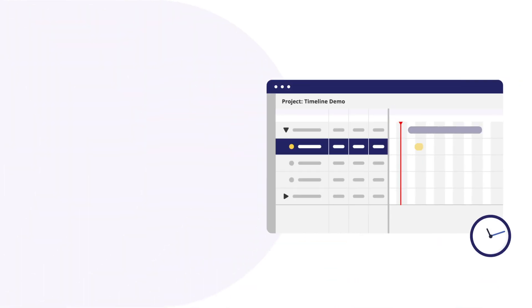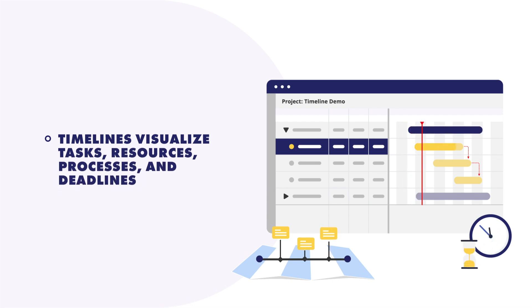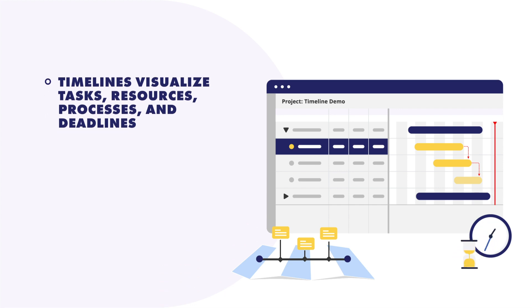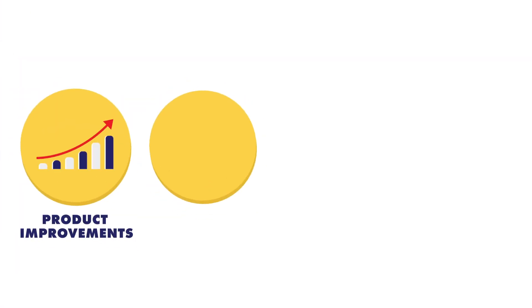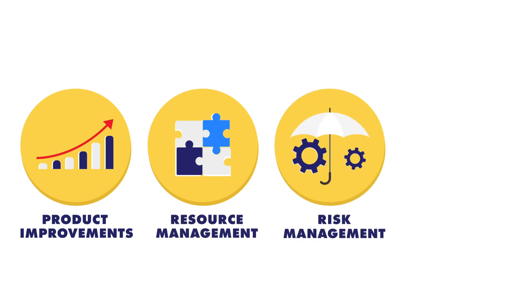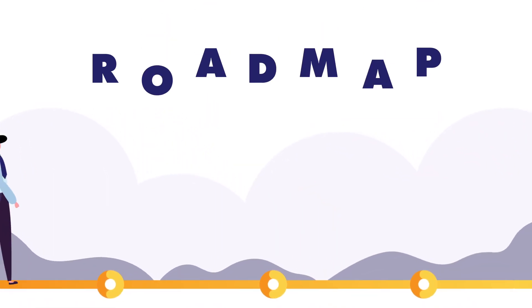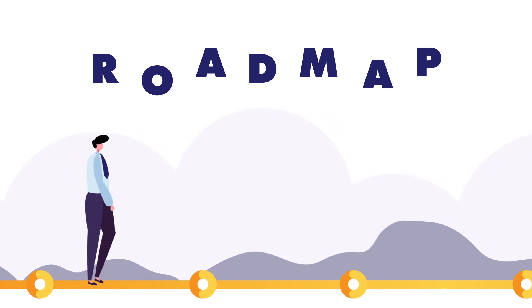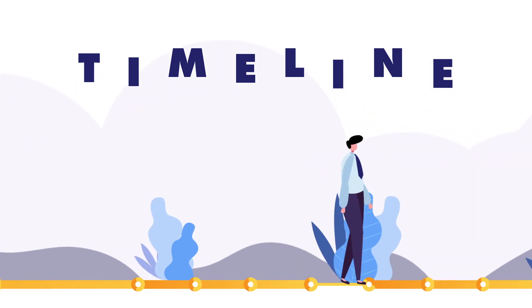You can think of a timeline as a mini roadmap. A timeline shows the tasks, resources, processes, and deadlines necessary for project management. Since they are mini roadmaps, timelines have shorter strategies to address product improvements both iteratively and linearly. The key components of timelines are product improvements, resource management, risk management, and deadlines. In short, roadmaps give you the long-term macro view of product and business development, while timelines provide a short-term micro view of project management.